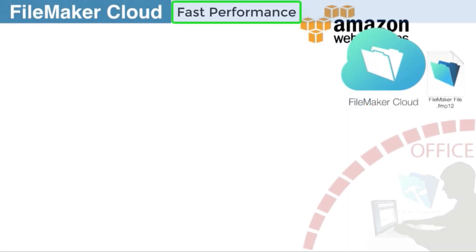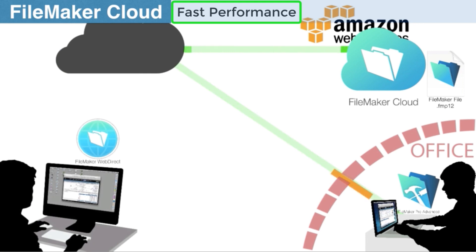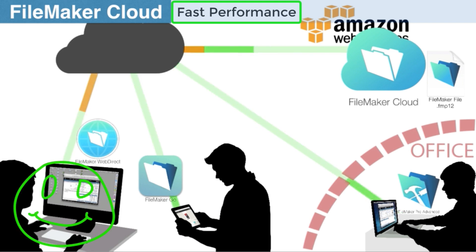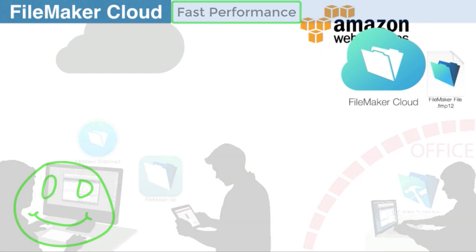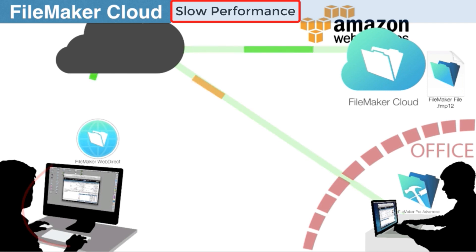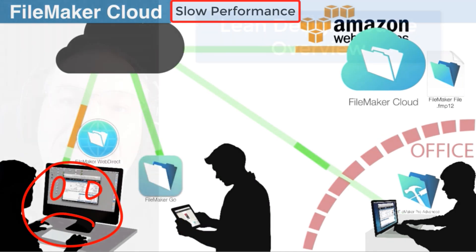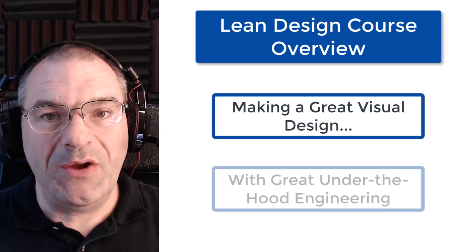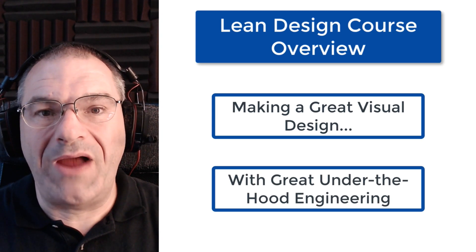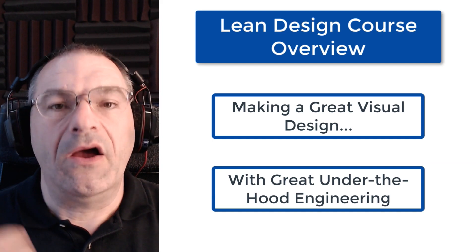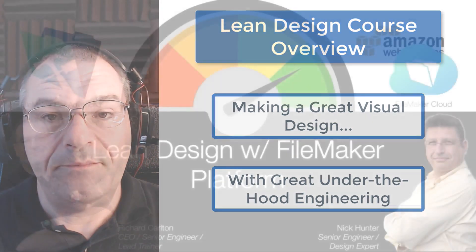If you've been in the FileMaker business for any period of time, a custom application that provides quick, snappy performance is one of the criteria by which users judge a successful application. The application has to help users accomplish some tasks, but it also has to do it in a fast and snappy way — users can't be sitting there waiting for things to happen. Lean Design is about making a great visual design, as well as great engineering work under the hood to make sure your FileMaker application is very performant, working rapidly across the internet.